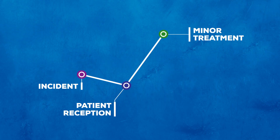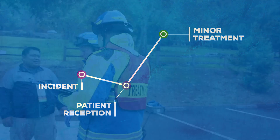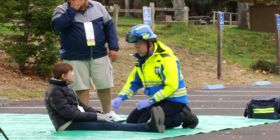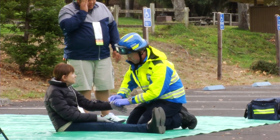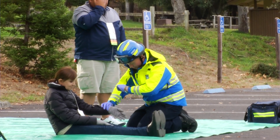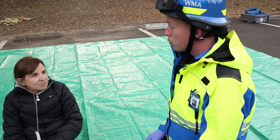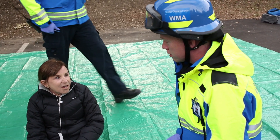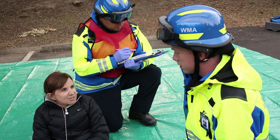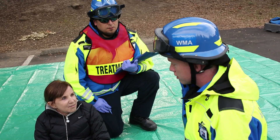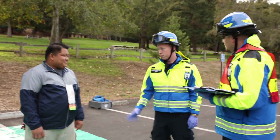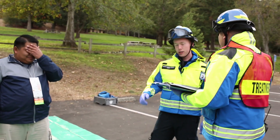The minor treatment area is staffed with at least one BLS level provider. Patients sent here will be able to walk and will receive minor care according to their needs. All patients must be re-triaged periodically, and if their triage category changes, the personnel assigned here must advise the treatment unit leader. Patients who remain in the minor triage category and require transport to the hospital will be loaded into ambulances as resources allow.